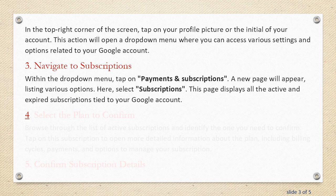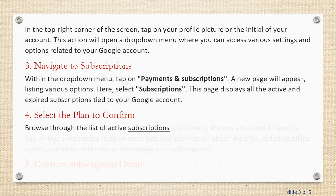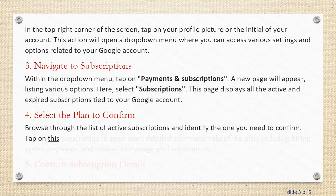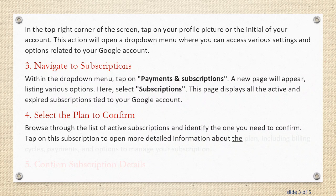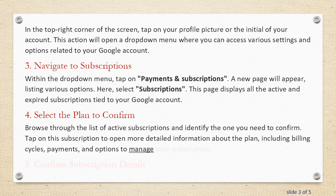Step 4: Select the plan to confirm. Browse through the list of active subscriptions and identify the one you need to confirm. Tap on this subscription to open more detailed information about the plan, including billing cycles, payments, and options to manage your subscription.